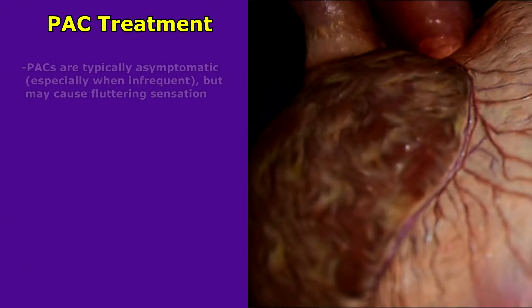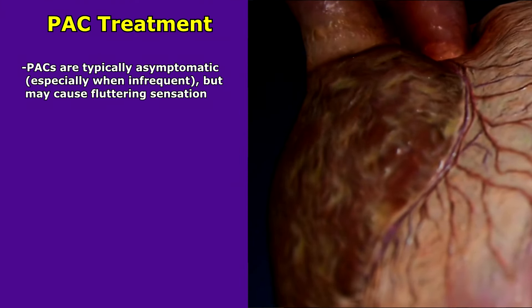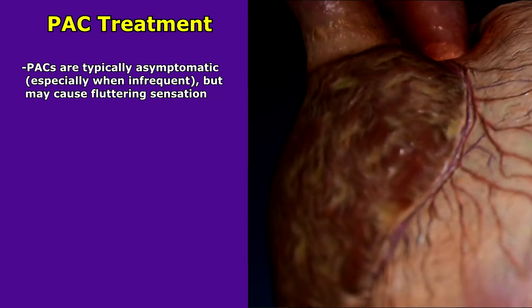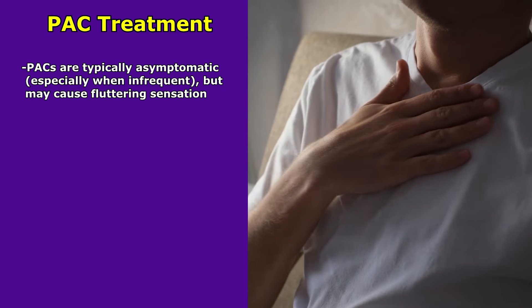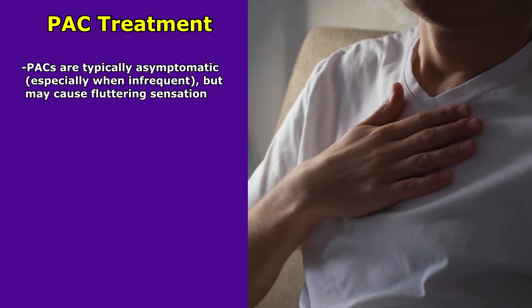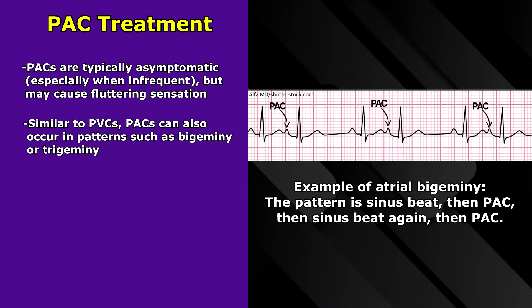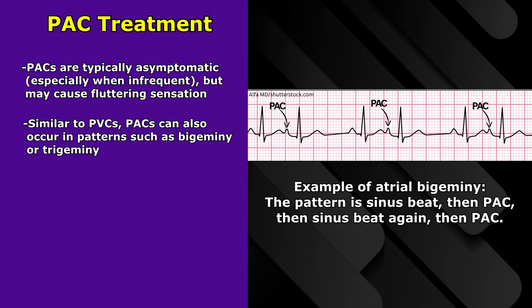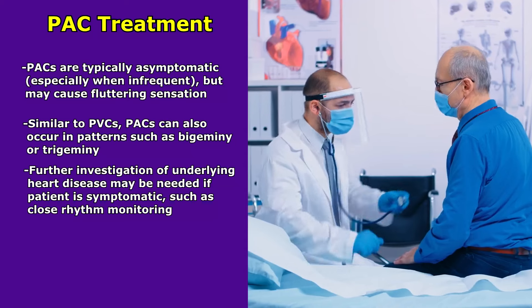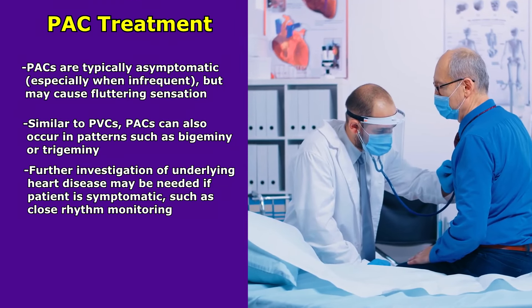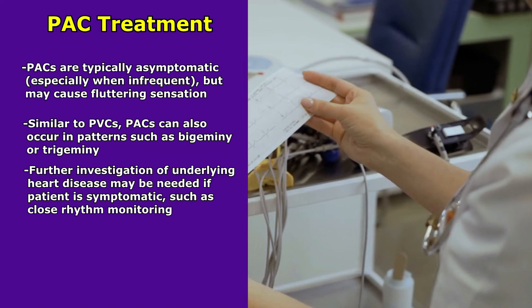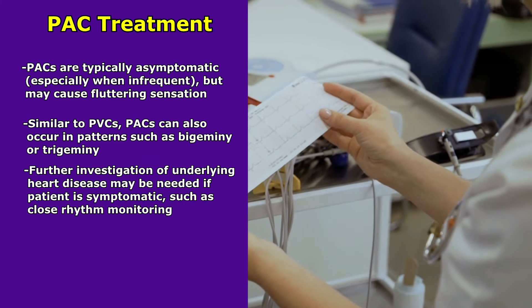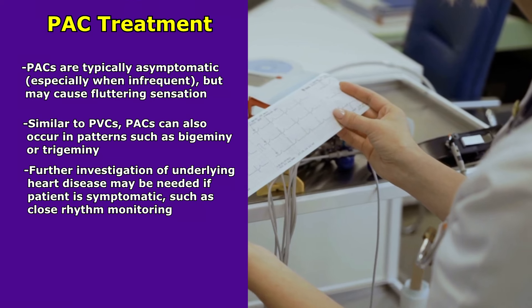PACs are typically asymptomatic — many patients don't even know they're having them, especially if they're infrequent. However, if a patient is having them frequently, they may report palpitations and a fluttering sensation in the chest. PACs can also occur in patterns like bigeminy or trigeminy. The rhythm shown earlier was atrial bigeminy — sinus beat, PAC, sinus beat, PAC. If PACs are frequent or occurring in abnormal patterns, further investigation may be needed to assess for underlying heart problems, and close monitoring of the rhythm will be required.